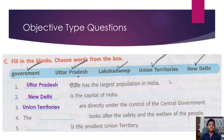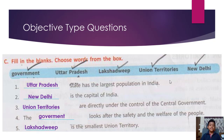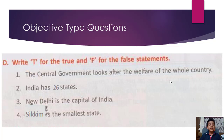Uttar Pradesh state has the largest population in India. New Delhi is the capital of India. Union territories are directly under the control of the central government. The government looks after the safety and the welfare of the people.